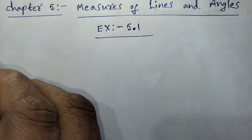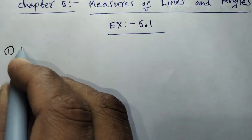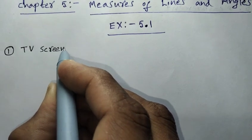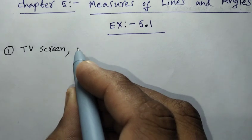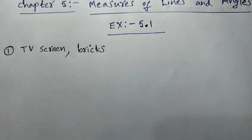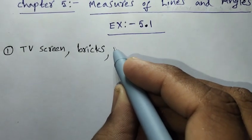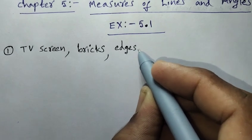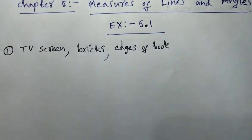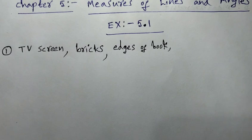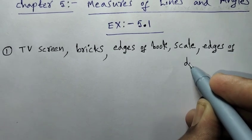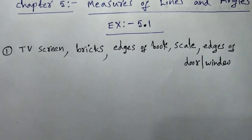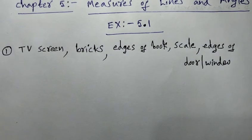Here are 5 examples of line segments from everyday objects: a TV screen, which is rectangular and has 4 line segments; bricks, which are rectangular; edges of a book, which has 4 line segments; a scale; and edges of a door or window. Each of these examples contains 4 line segments.